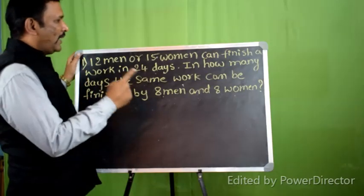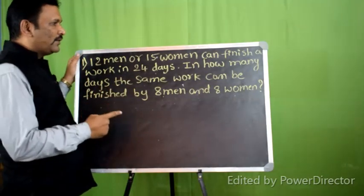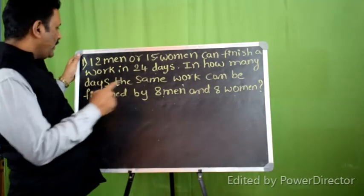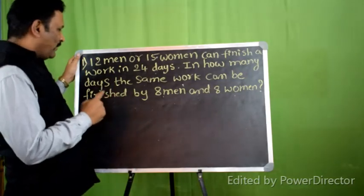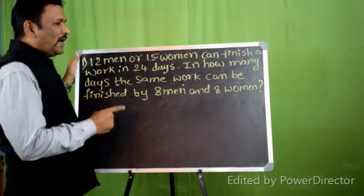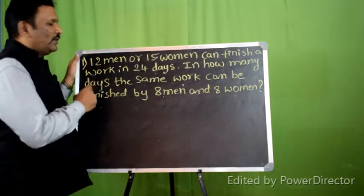12 men or 15 women can finish a work in 24 days. In how many days can the same work be finished by 8 men and 8 women?